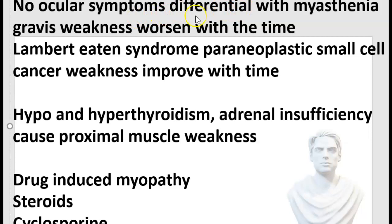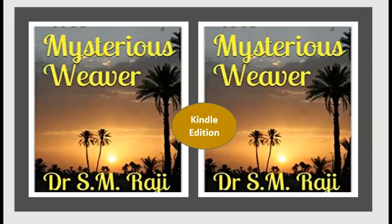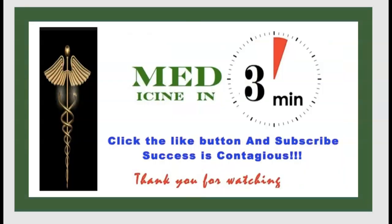In review: No ocular symptoms differentiates myositis from myasthenia gravis, where weakness worsens with time. Lambert-Eaton syndrome is a paraneoplastic small cell lung cancer condition where weakness improves with time. Hypo- and hyperthyroidism and adrenal insufficiency can cause proximal muscle weakness. Drug-induced myopathies include steroids, cyclosporine, and statins. Thank you for watching this episode of Medicine in 3 minutes — please like and subscribe.